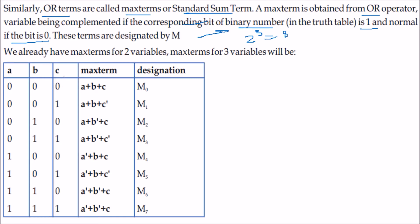For the same 3-variable truth table with 8 rows, writing maxterms: for the row where a=0, b=0, c=0, since all are 0 we write a plus b plus c, designated M0. For a row where a=0, b=1, c=1 — since a is 0 we write a, but b is 1 so we write b-complement, and c is 1 so c-complement — giving a plus b-complement plus c-complement, designated M3. We have M0 through M7, giving 8 maxterms.